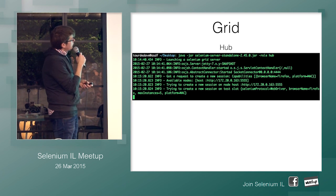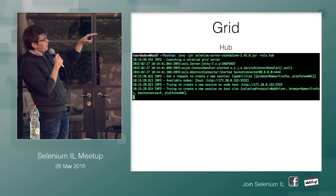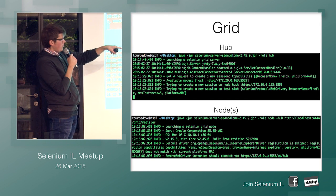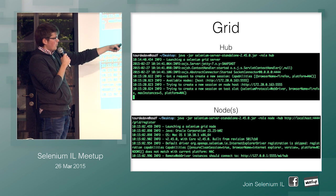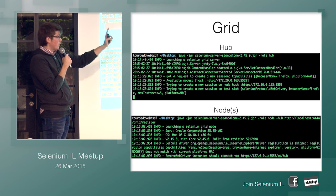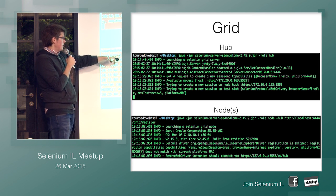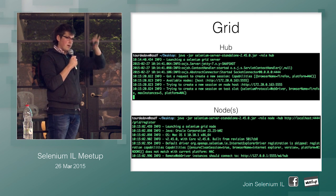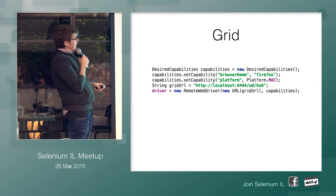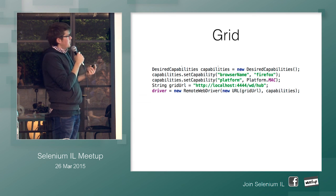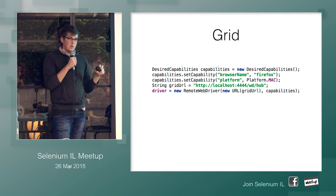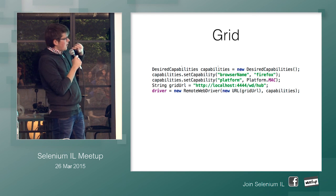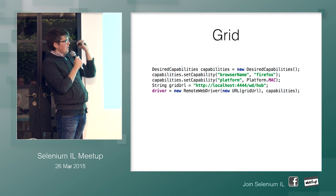For the hub, the command would be 'java -jar [file] --role hub', and for nodes it would be '--role node', then you point to the hub. You can view the grid console in the web to see what nodes and browsers you have access to. To configure your tests for the grid, you use what's called desired capabilities — this is how you tell Selenium which browser, OS, and platform combination you want. Then you use Selenium Remote and pass in the URL to your grid and the capabilities you configured.